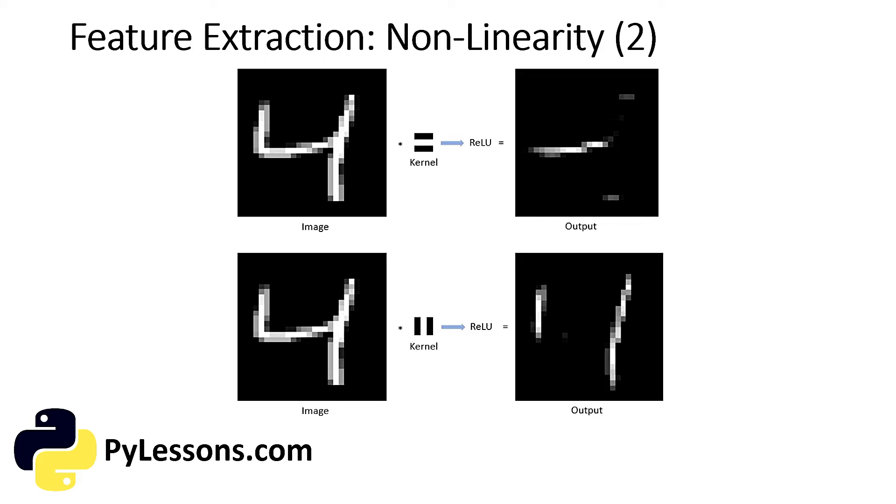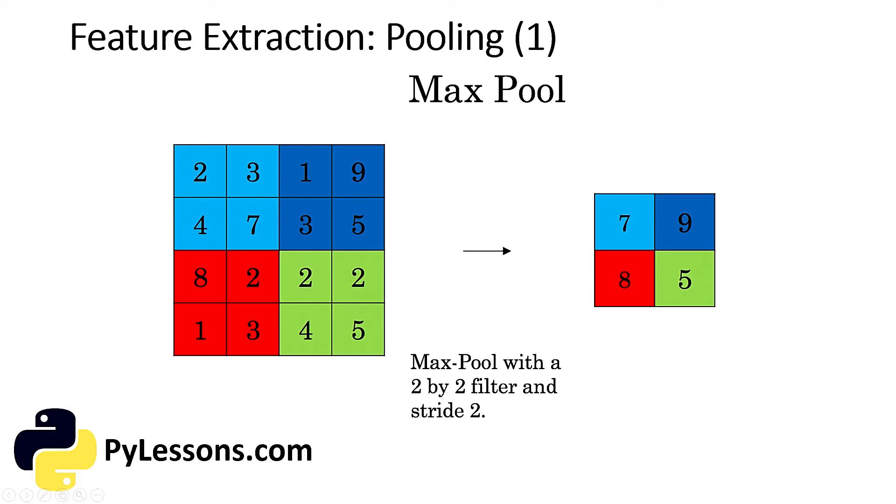Next thing is pooling. After the convolutional layer, once you get the feature map, it is common to add a pooling or a sub-sampling layer in CNNs. Similar to the convolutional layer, the pooling layer is responsible for reducing the spatial size of the convolved features. This is to decrease the computational power required to process the data through dimensionality reduction. Furthermore, it is useful for extracting dominant features which are rotational and positional invariant, thus maintaining the process of effectively training the model. Pooling shortens the training time and controls overfitting.